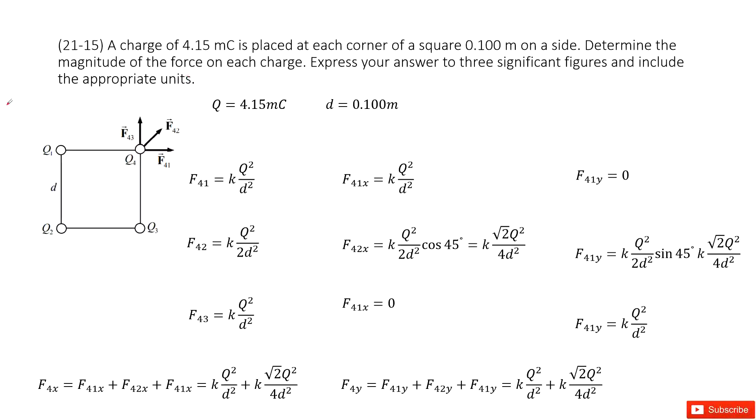Now we have this system. We can see for this square, there are four charges placed at the corner of this square. The charges for each particle is a constant q, so it's 4.15 mC. The distance between two charges is given as d. Now we need to find the magnitude of the force on each charge.